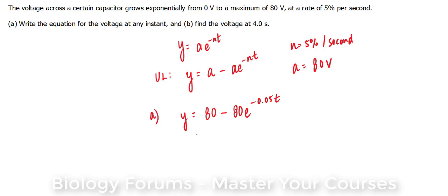We can even go ahead and factor out an 80, which won't really help us out but it looks neater: 80 times 1 minus e to the power of negative 0.05t. This formula will give you the voltage at any instant leading up to 80 volts.